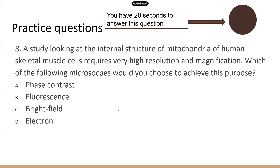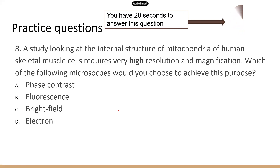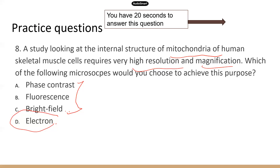Next question: this is similar to the previous question, but the specimen is changed from viruses to mitochondria. This still requires very high resolution and magnification, so which would you use? Again, the answer is D. The other three are light microscopes that can't get down to the level of organelles like mitochondria, so you have to use electron microscopes.